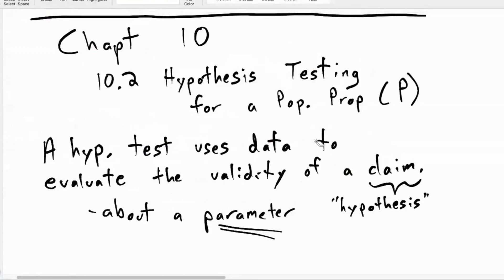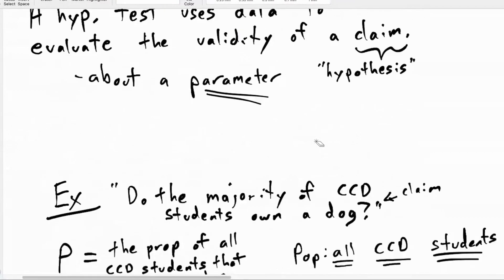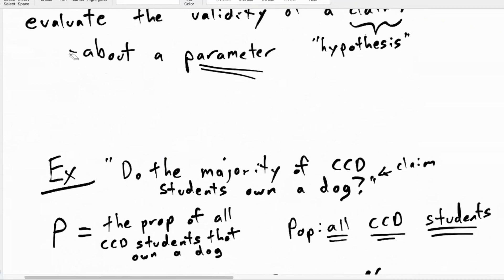This is the point of hypothesis testing. This is the claim, this is the parameter that claim is about — it's about a proportion. The majority is about a proportion, and it's also about a population. Is this an easy claim to know whether it's true or not? Definitively know that? No. Just like parameters are not easy to know, anything that involves a large group of people is hard to know.